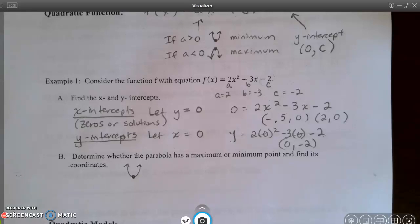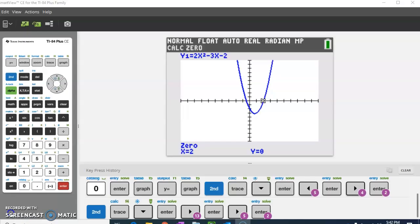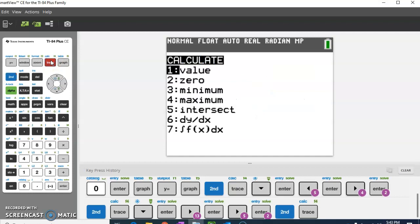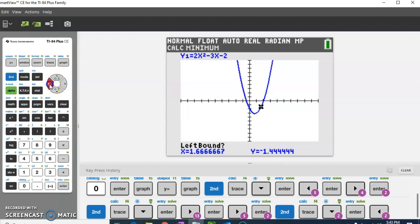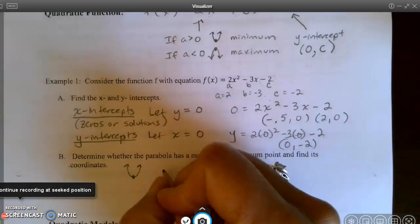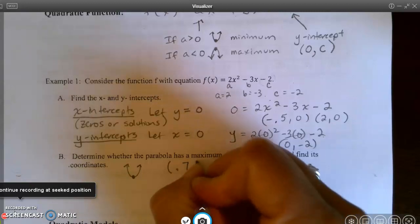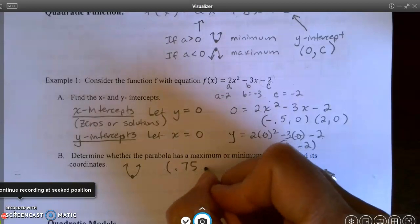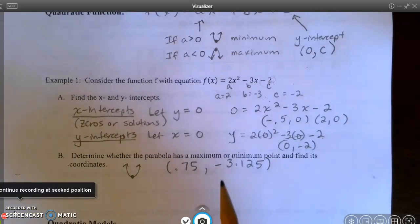Now, if we were going to use the calculator, we could do it very quickly. We can find that minimum value by doing the second trace again, just like we did for the zeros. But now, rather than choosing zero, we're going to choose minimum. Hit enter. Now I need to be to the left of the minimum, and obviously this right here is the minimum. I need to be to the left, so I hit enter. Now I need to be to the right. I hit enter. So my minimum value is 0.75. It said 0.749999. So we'll say 0.75 and -3.125. So that is my minimum value.